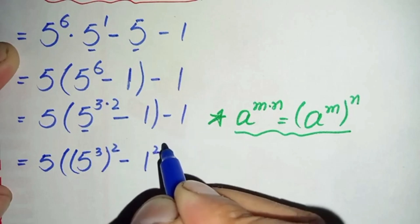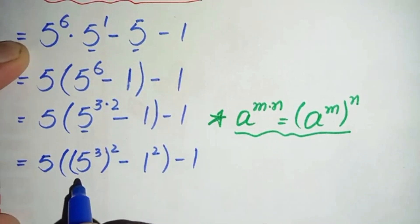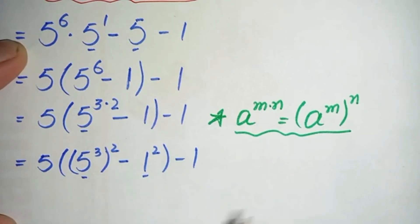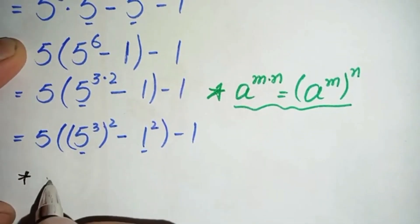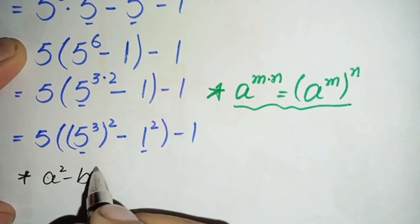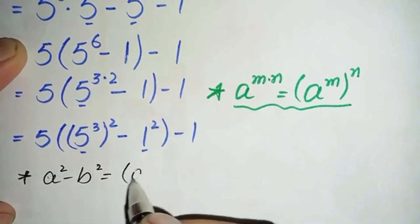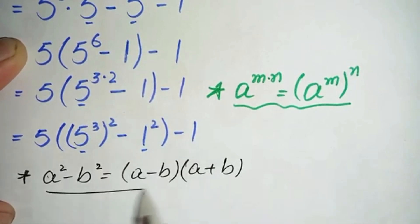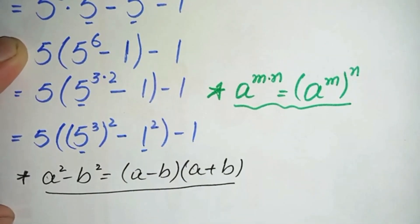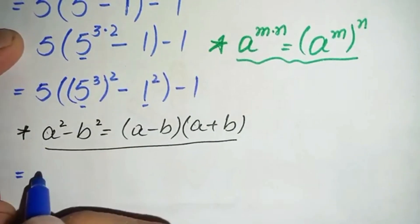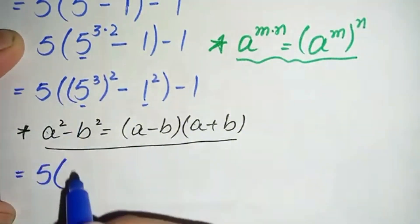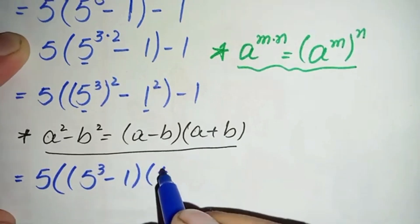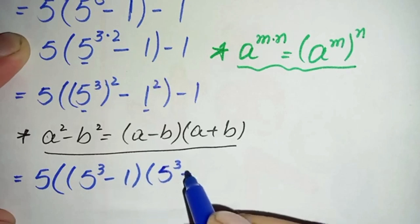Minus 1 squared, minus 1. Inside the parenthesis we will use the algebraic identity a squared minus b squared, which is equal to a minus b times a plus b. So using this identity, this equation will become equal to 5 times 5 raised to power 3 minus 1, times 5 raised to power 3 plus 1, minus 1.